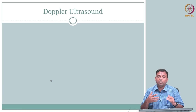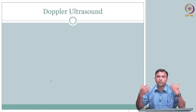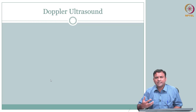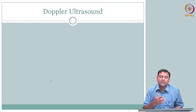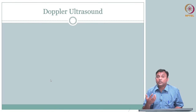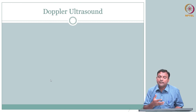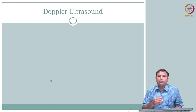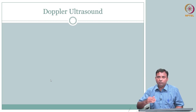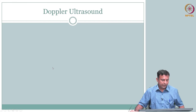In pulse-echo ultrasound, the same probe both generates the signal and receives echoes — no through-transmission needed. The echoes, whether from specular reflection or scattering, encode the distribution of acoustic reflectivity, which encapsulates density, compressibility, speed of sound, and acoustic impedance Z. This is what forms the ultrasound image. The Doppler principle, which can be used for blood velocity measurement, will be covered in the next lecture.